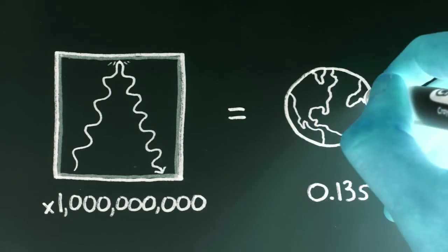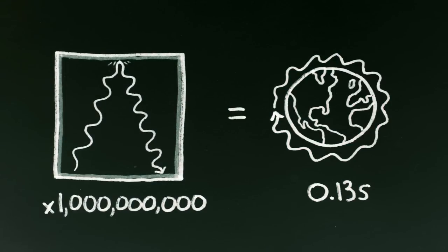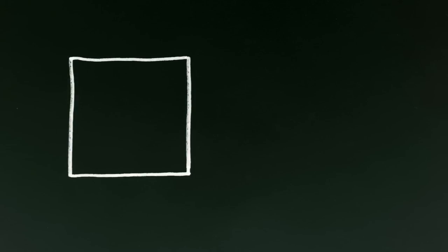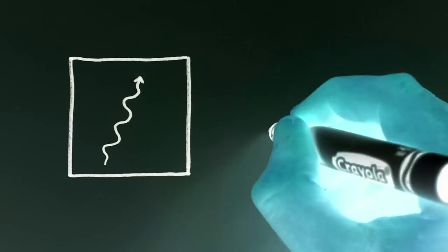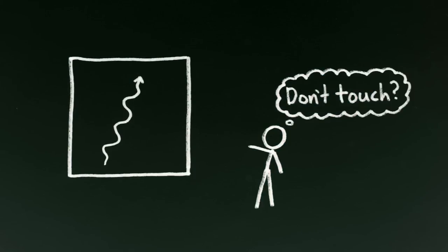In that time, they'll travel a distance equivalent to one trip around the earth. This box is also so cold and dark that only occasionally will there even be one photon inside, and if there is one, how do we tell without destroying it?